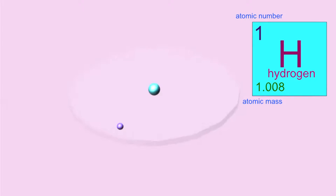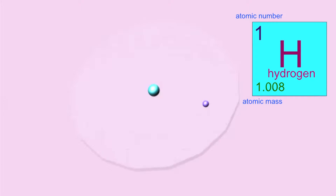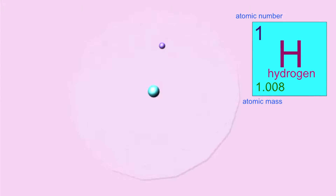The symbol for the element hydrogen is H. It has an atomic number of 1, indicating that there is one proton in the nucleus and one electron in the electron cloud around the nucleus in a neutral atom. The atomic mass is essentially 1, because the proton is the only heavy particle in the nucleus.